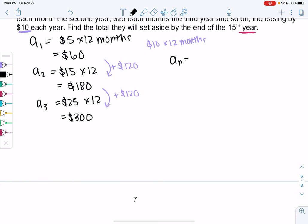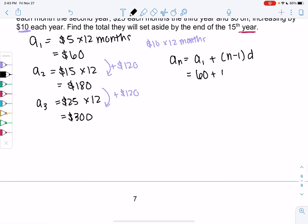Sorry, an will be a1 plus n minus 1 times that common difference. So in this case, we have 60 plus n minus 1 times the common difference of $120.